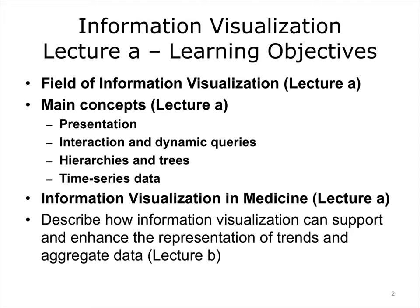By the end of this unit, learners will be able to: 1. Define what information visualization is and what it is not. 2. Understand different ways to present different types of information, from simple to complex sets with multiple variables. 3. Discuss how to visualize information that is inherently hierarchical. 4. Understand ways to design not only static visualizations that don't change over time, but also dynamic visualizations that allow users to interact with them.